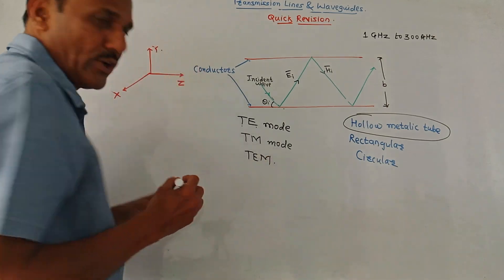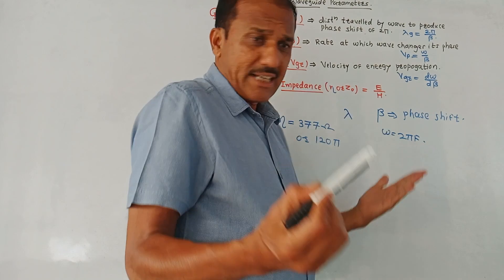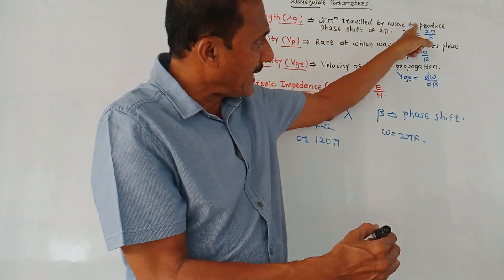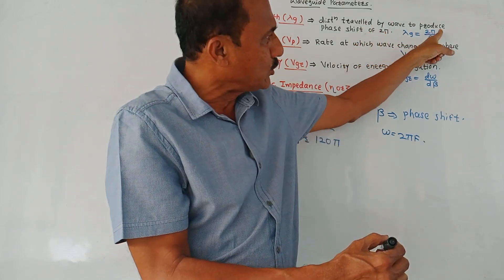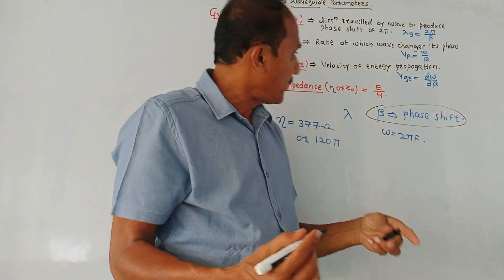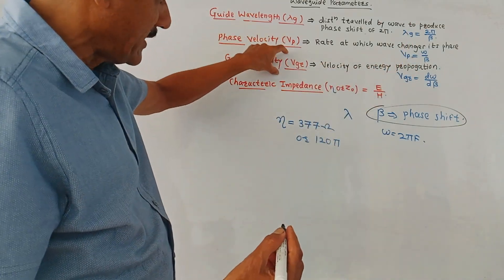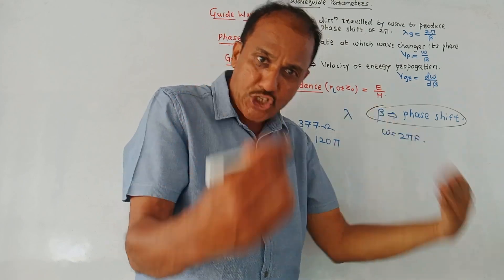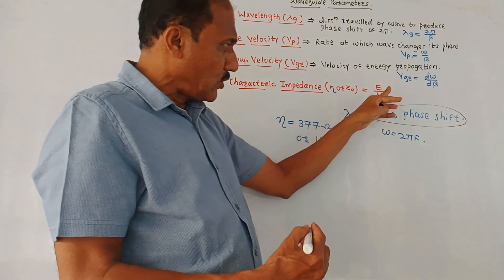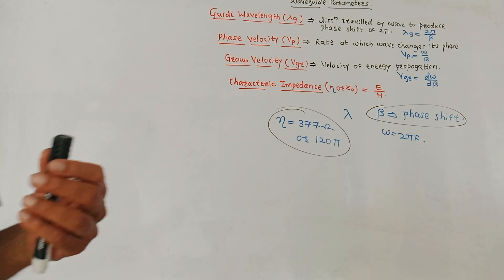One more mode is TEM mode, which is transverse electromagnetic mode. Next are waveguide parameters. From the exam point of view, a few definitions may be asked. First, guide wavelength, notation lambda g: the distance travelled by the wave to produce a phase shift of 2π radians. Formula: lambda g = 2π / beta, where beta is the phase shift. Next, phase velocity, also called velocity of propagation: the rate at which the wave changes its phase. Formula: vp = omega / beta. Next, group velocity: the velocity with which propagation of energy takes place. It is vgr = d(omega)/d(beta). Characteristic impedance eta or Z0: the ratio of electric field to magnetic field intensity. For free space, its value is 377 ohms or 120π.